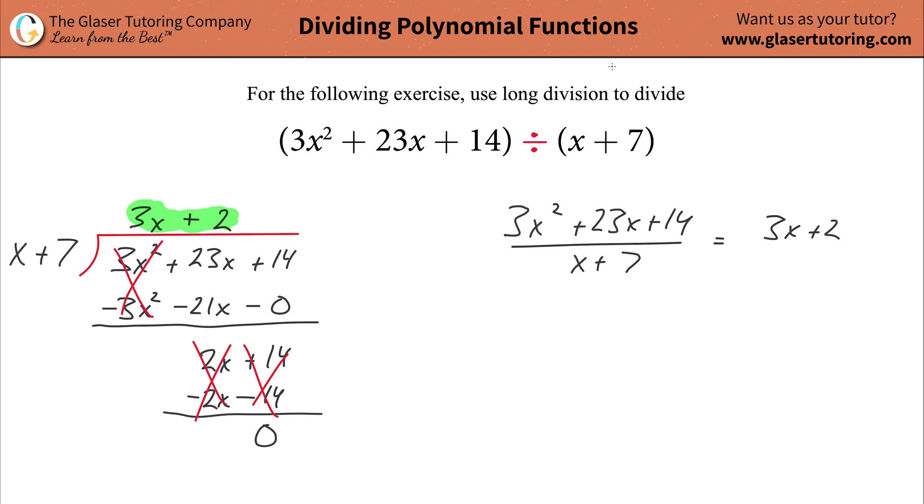Now, how do we check ourself? You can simply use a plug-in method. Say x is equal to 2. Plug in 2 everywhere you see an x. So it's going to be 3 times 2 squared plus 23 times 2 plus 14, all divided by 2 plus 7, and that better equal 3 times 2 plus 2.